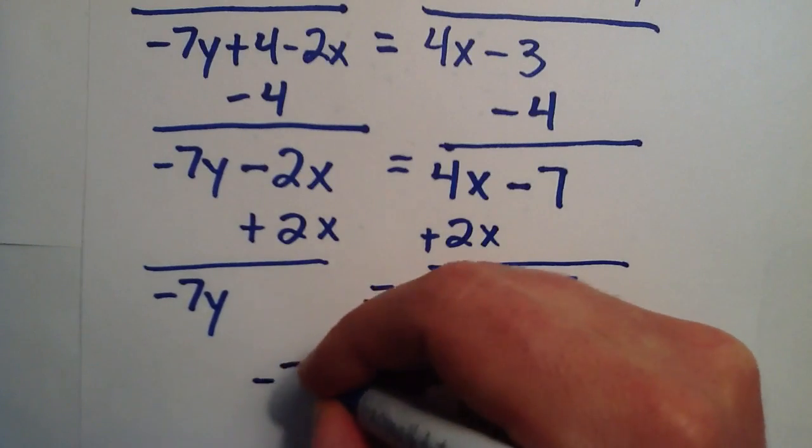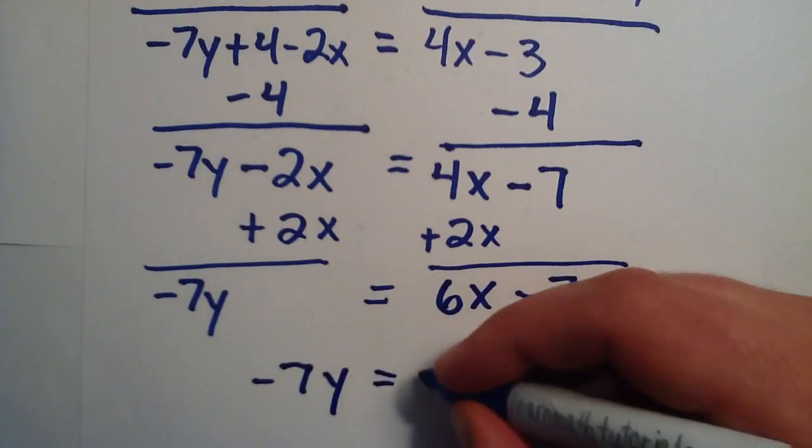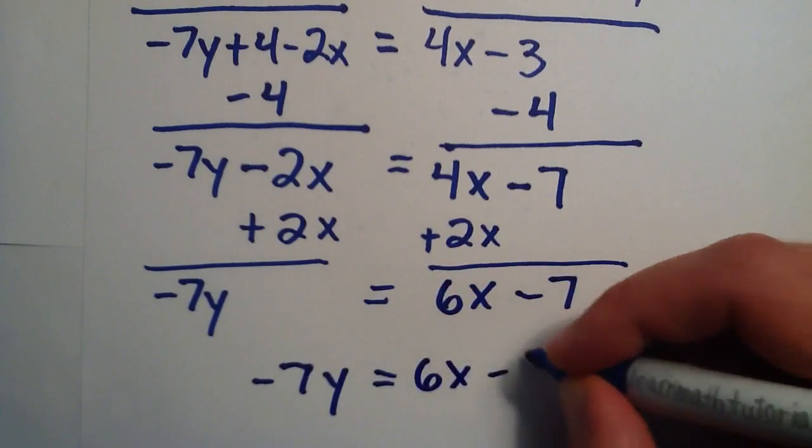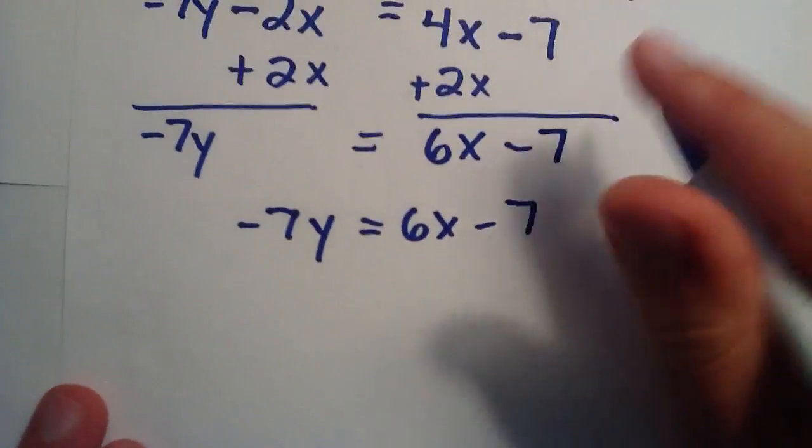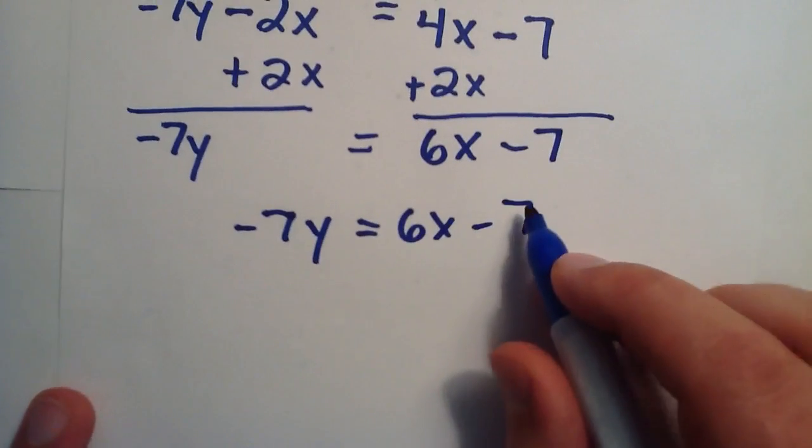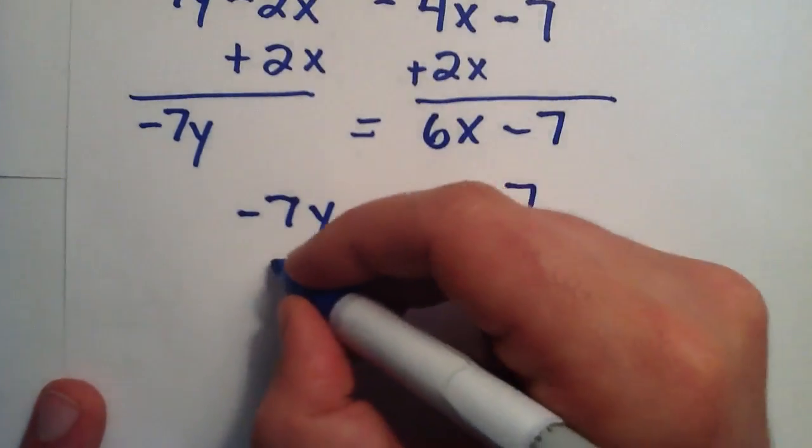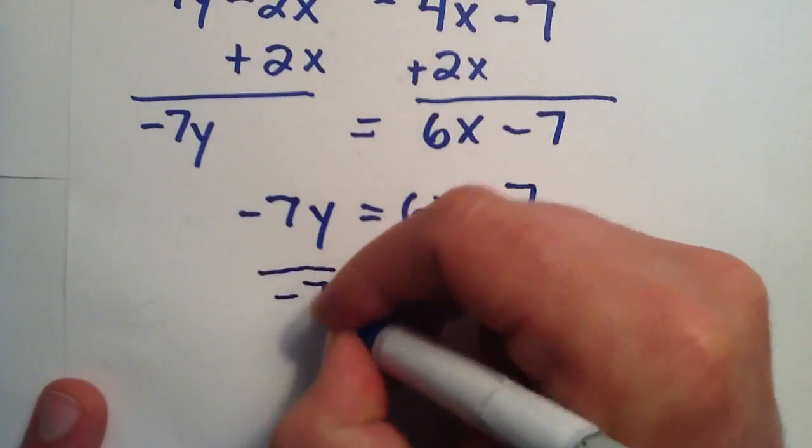So now we have negative seven y is equal to six x minus seven. And we want to write this as y equals some combination of everything else.